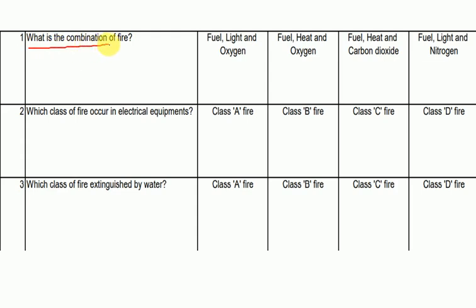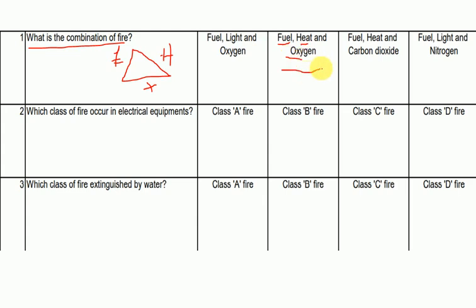First question: What is the combination of fire? Fire has three combinations — the Fire Triangle. The three combinations are fuel, heat, and oxygen. So the answer to what is the combination of fire is: fuel, heat, and oxygen.